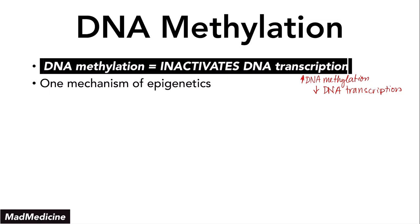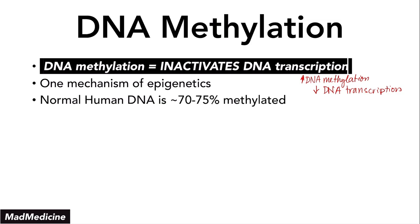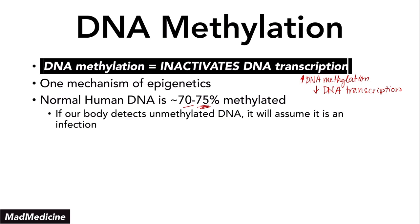The majority of our DNA is actually methylated. Normal human DNA is actually 70% to 75% methylated. You would think you want your DNA to be unmethylated, but that's not the case. The reason why is because this is a defense mechanism. If our body detects unmethylated DNA, it's going to assume it is an infection. Keep in mind that 20% to 25% of the DNA is unmethylated, and that portion is usually unmethylated because it's involved in cellular processes — certain genes might be getting transcribed or certain pathways might be getting activated at that point in time.